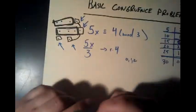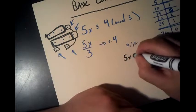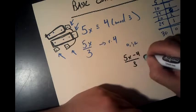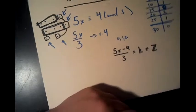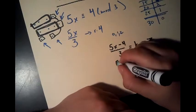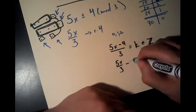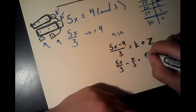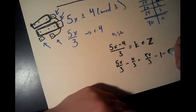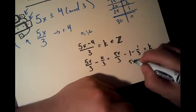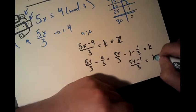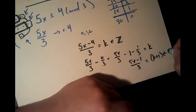So to see this algebraically, let's just take the statement. So 5x minus 4 over 3 is some k, which is an element of integers. So I have 5x over 3 minus 4 over 3 equals 5x over 3 minus 1 minus 1 over 3. That equals some integer. So I have 5x minus 1 over 3 equals some integer plus 1, which is still an integer.